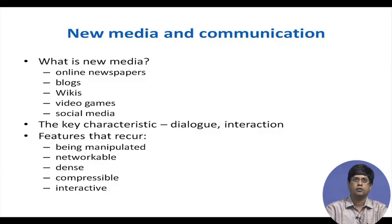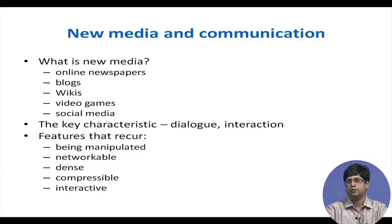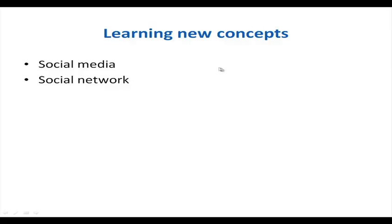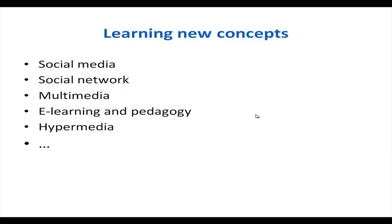The next topic already shared but worth highlighting quickly is new media, which is very relevant for soft skills and communication. New media is digital media — online newspapers, blogs, wikis, video games, social media — and the fundamental feature of these is dialogue and interaction. There is perpetual scope for quickly interacting, unlike letters that took weeks or months to be delivered. Key features of new media are that content can be manipulated, networked, is dense, can be compressed, and is very very interactive. We will be exploring and experimenting with these features as we proceed. Concepts like social media, social networks, multimedia, e-learning and pedagogy, and hypermedia will be dealt with as they have become relevant in the context of communication and soft skills.